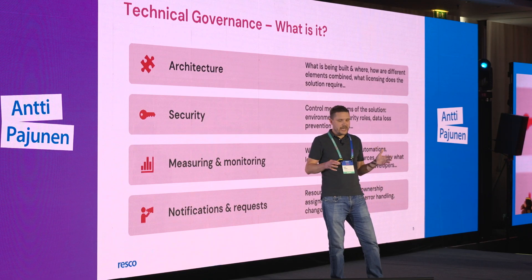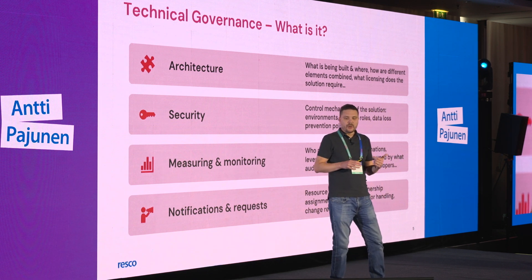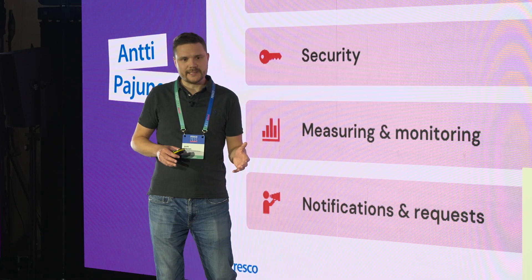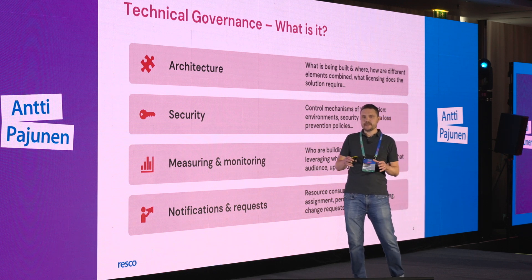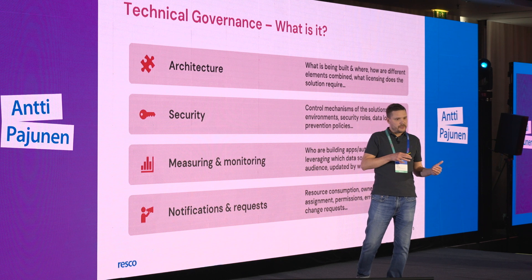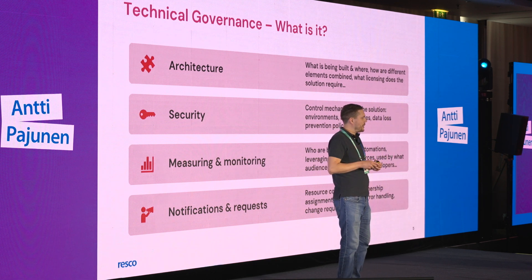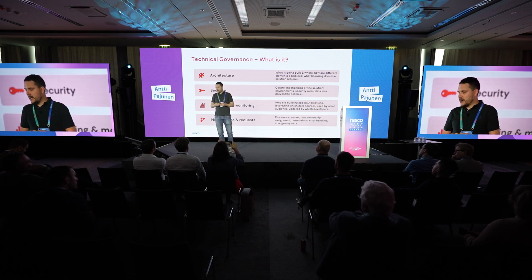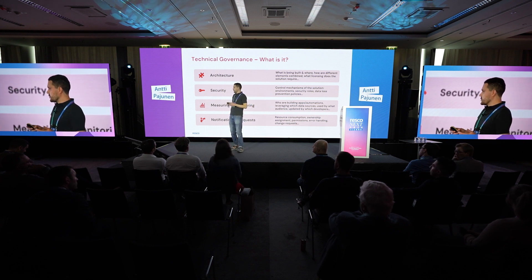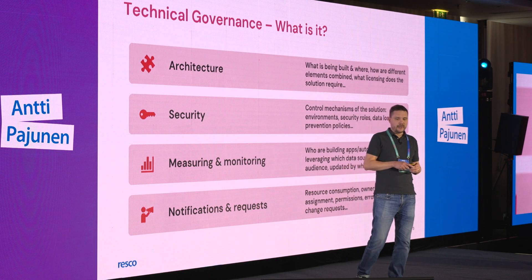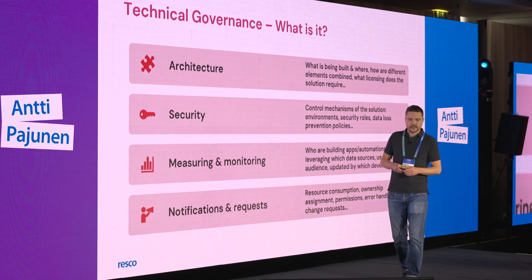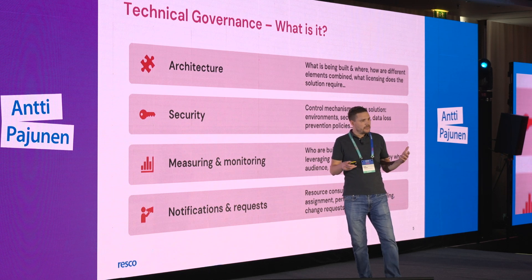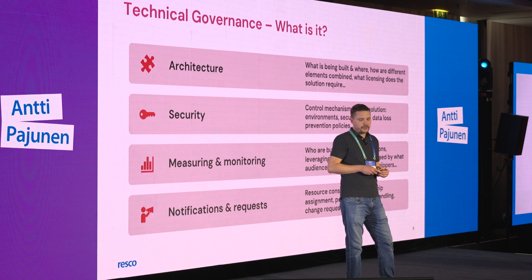Let's dive into these topics. Architecture is naturally what is being built and where do we build those things. It's also licensing. I love to say that architecture and licensing go hand in hand — good architecture requires knowledge of licensing, and vice versa. Security is also a big topic: who gets access, what kinds of security roles do we use, what kinds of accounts do we use, do we use service principals? Is our cybersecurity team saying you can only use service accounts, or vice versa? When do citizen developers use their named accounts?